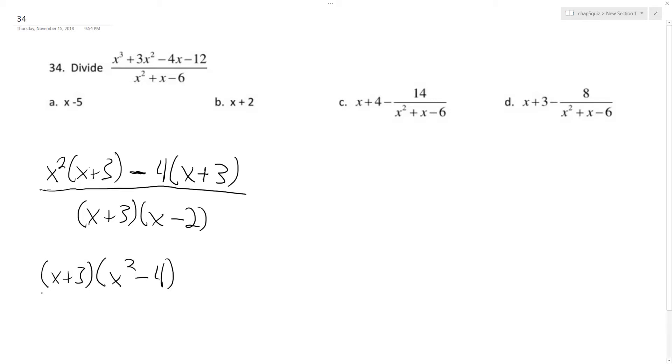And this x squared minus 4 can actually become x plus 2, x minus 2, over, and then our x plus 3, x minus 2.